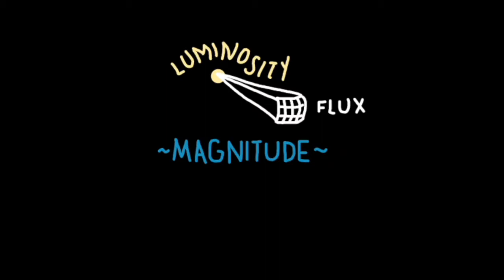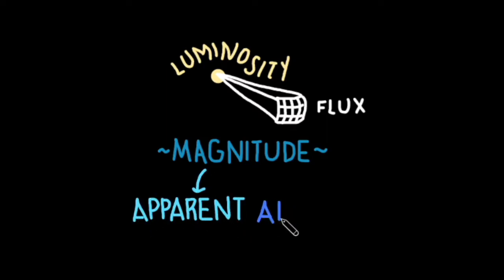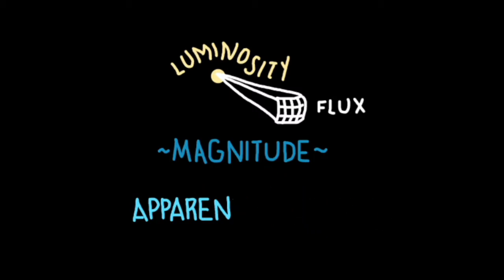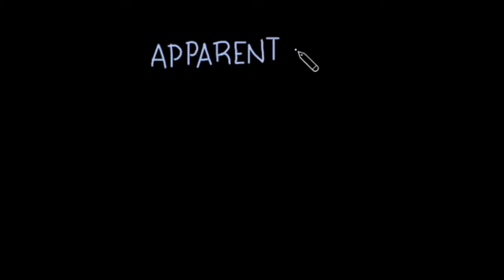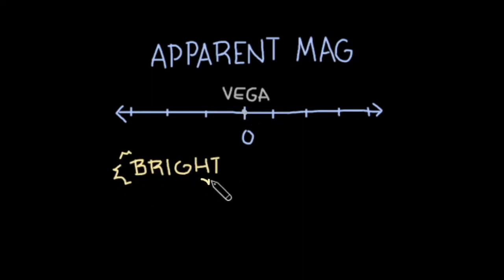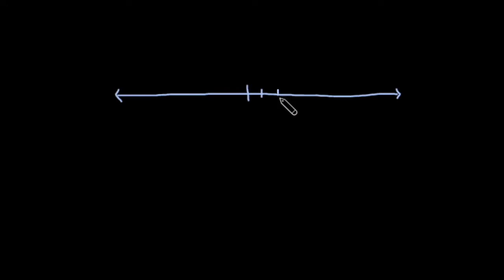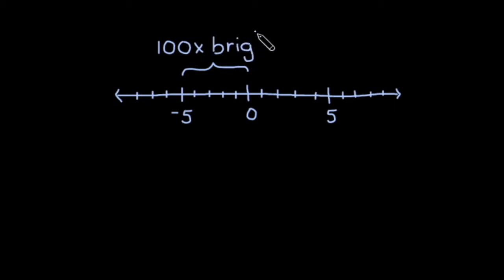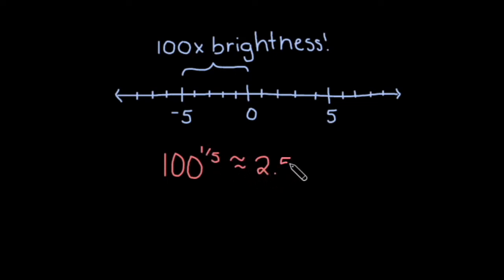The magnitude system is a scale which allows us to compare the brightness of various objects. There are two types of magnitudes we use to refer to a celestial object: apparent magnitude and absolute magnitude. On the apparent magnitude scale, we set the star Vega to zero. Somewhat counterintuitively, objects that are brighter than Vega have negative magnitudes, while stars that are dimmer than Vega have positive magnitudes. This logarithmic scale is set so that a decrease of 5 magnitudes yields an object that is 100 times brighter than the first. That means a difference of one magnitude corresponds to a brightness factor of 100 to the 1/5th power, or 2.512.